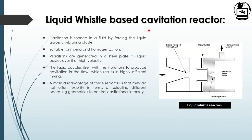The liquid vessel-based cavitation reactor forms cavities by forcing liquid across a vibrating blade. This reactor is suitable for mixing and homogenization. The vibrations cause deformation of cavities as liquid passes over the blade at high velocity. The liquid couples with vibrations to produce cavitation in the flow, resulting in highly efficient mixing. However, the main disadvantage is that these reactors do not offer flexibility in selecting different operating geometries to control cavitation intensity.